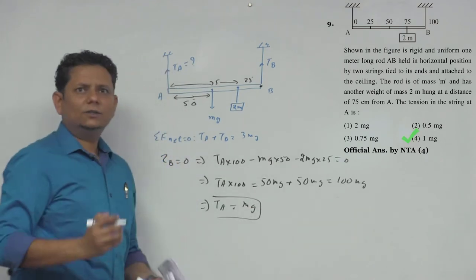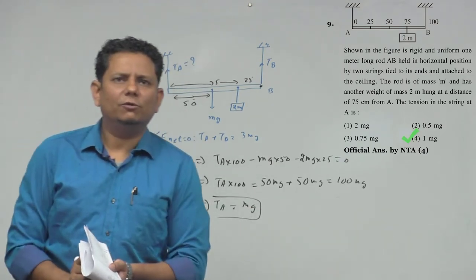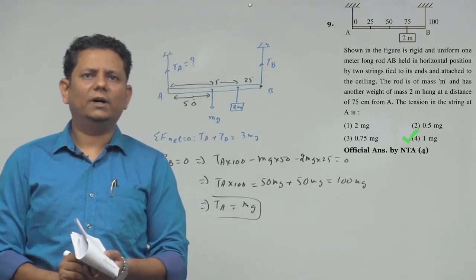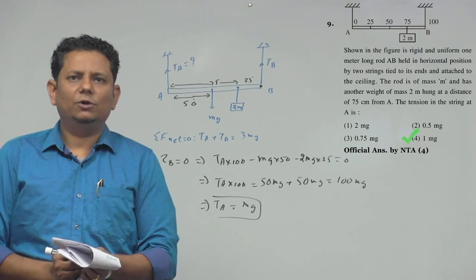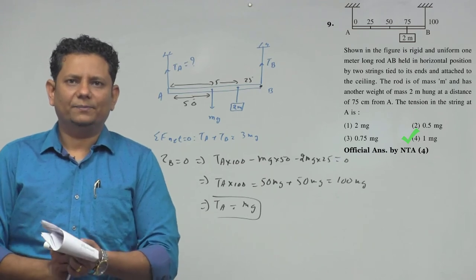So TA = Mg, which means option number 4, i.e., 1·Mg, would be the right answer.